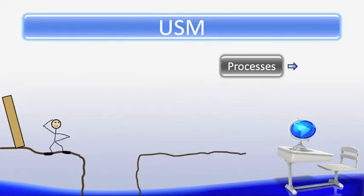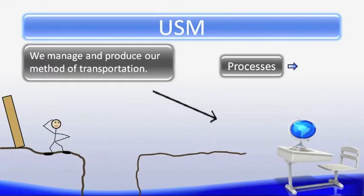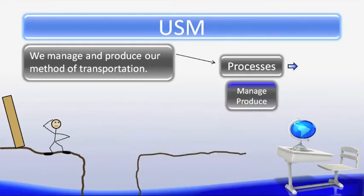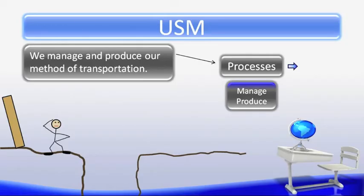During the processes stage, we manage and produce the method of transportation technology. Management includes the organization of inputs to ensure maximum benefit and efficiency. This also includes decision making on product testing data. Some of the questions asked are: does it work or does it not work, and what do we need to do to make it work if it didn't? The production part of our processes creates a lot of feedback for answering questions such as how well is the production of the transportation technology operating, and can improvements be made to maximize efficiency?